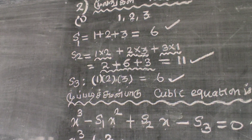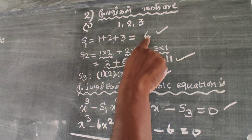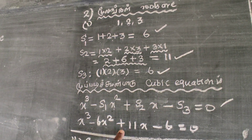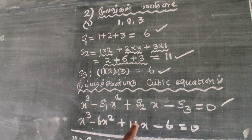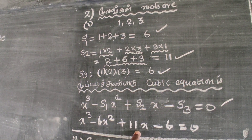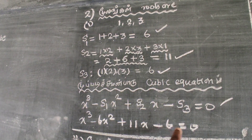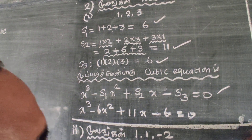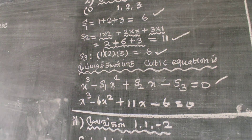Therefore, x cube minus 6 x square plus 11 x minus 6 is equal to 0. This is the cubic equation with roots 1, 2, 3.